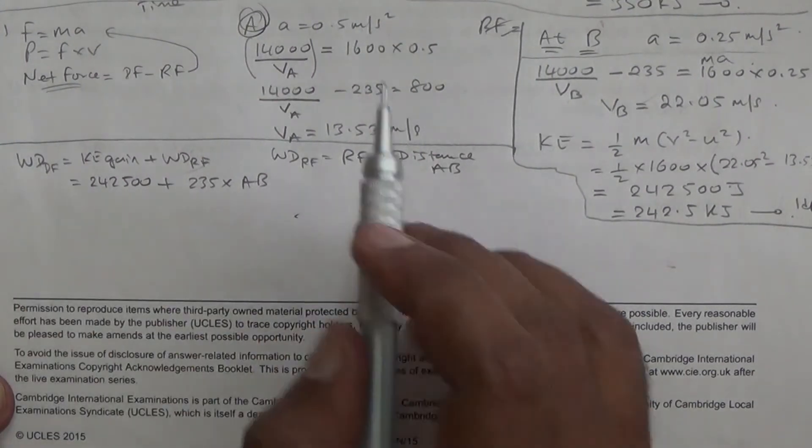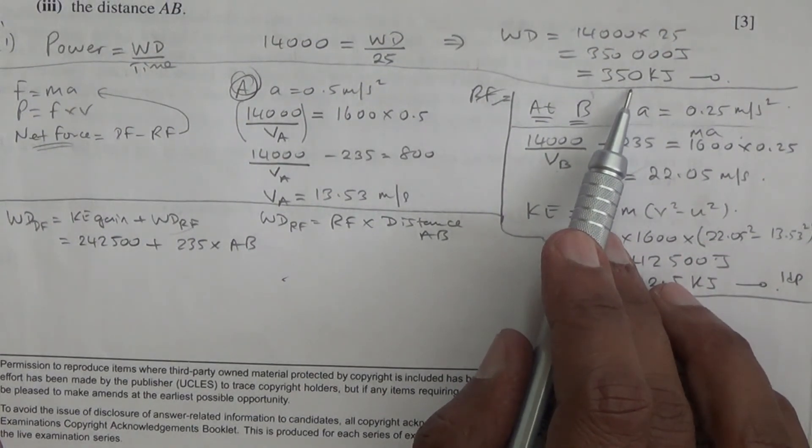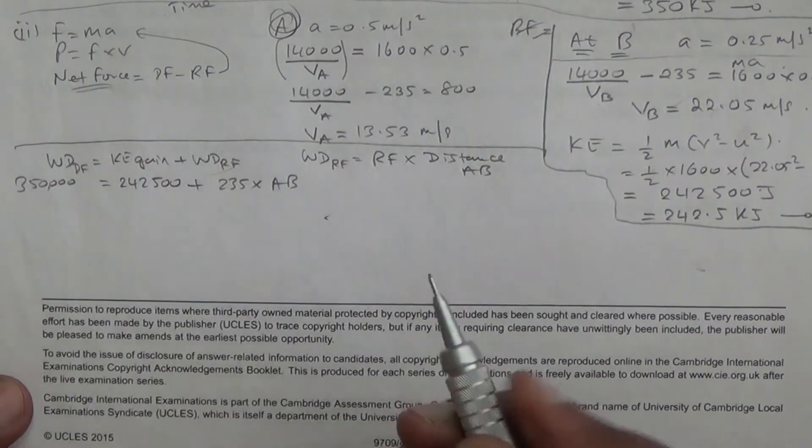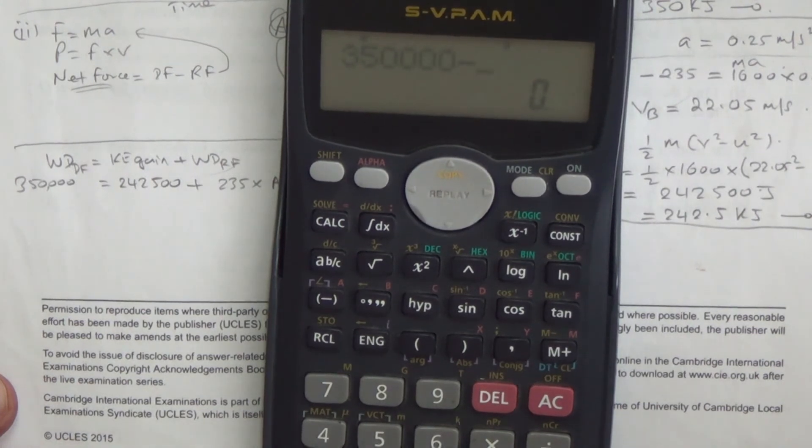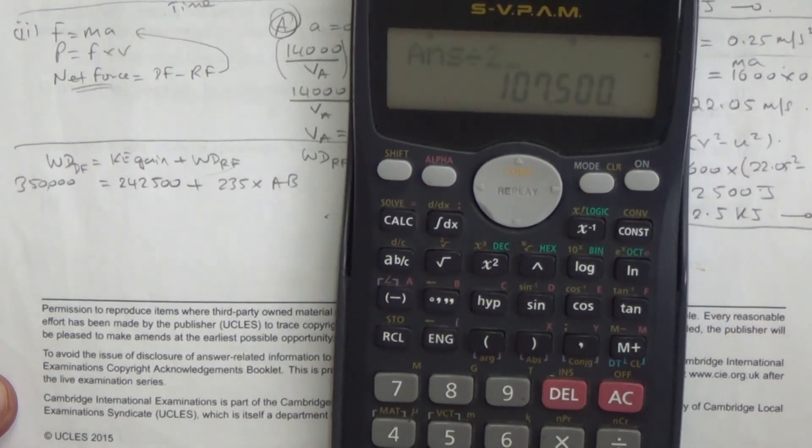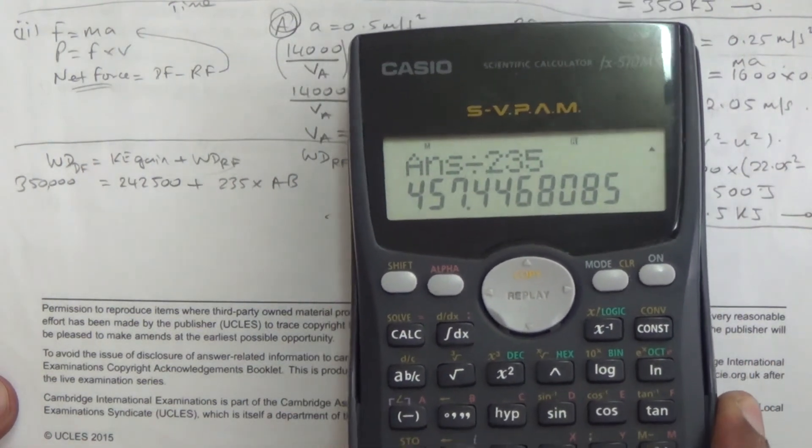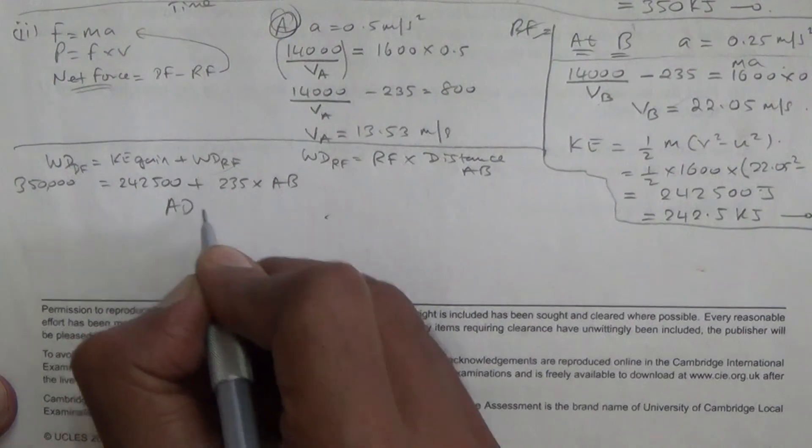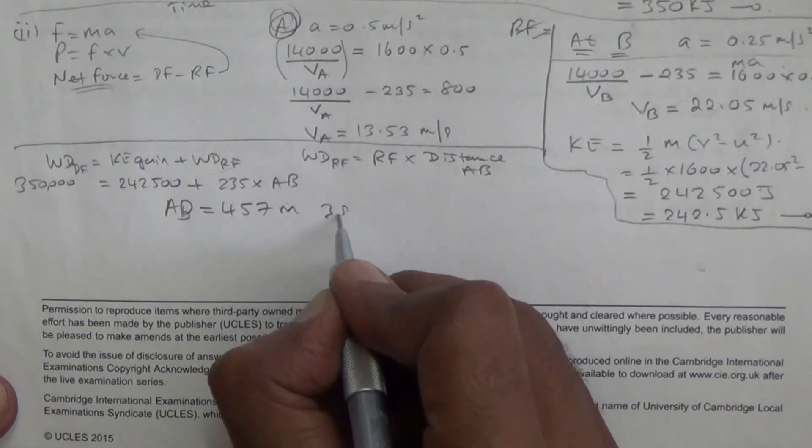And then you're going to equate that to the work done. The work done, we found it to be 350 kilojoules. That's 350,000 joules. So we're going to say 350,000 joules minus 242,500. And then we're going to divide by 235. So that comes to 457. Therefore, the distance AB is 457 meters to three significant figures.